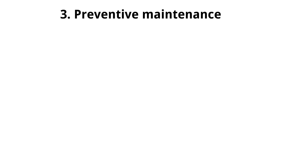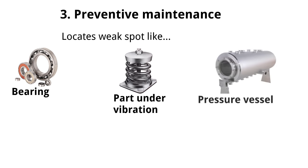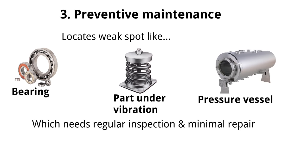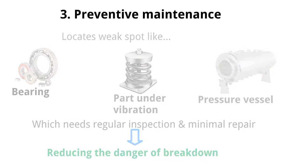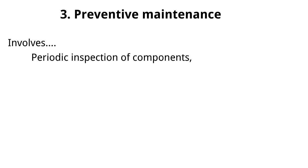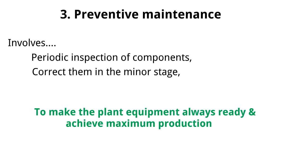3. Preventive maintenance. Preventive maintenance locates weak spots such as bearings, parts under excessive vibration, pressure vessels, etc., which need regular inspection and minimal repair, thereby reducing the danger of breakdown. Preventive maintenance involves periodic inspection of components and corrects them while they are still in a minor stage, to make plant equipment always ready for use and achieve maximum production.